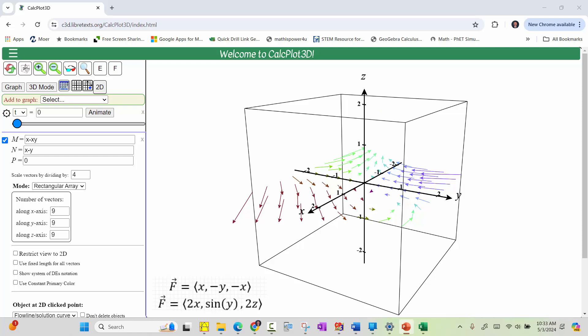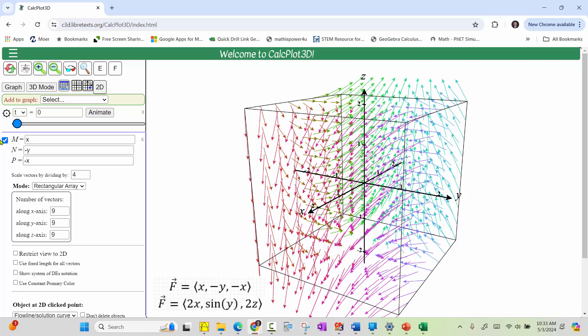For the first vector field, the x component is x, the y component is negative y, and the z component is negative x. This indicates we enter m equals x, tab, n equals negative y, tab, and p equals negative x, enter. Notice the vector field automatically appears at the right.